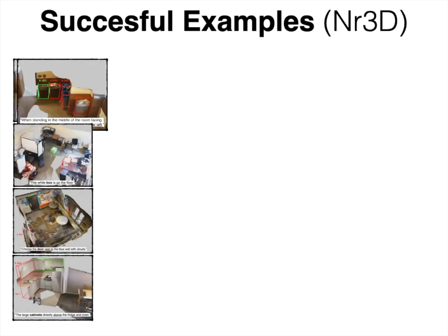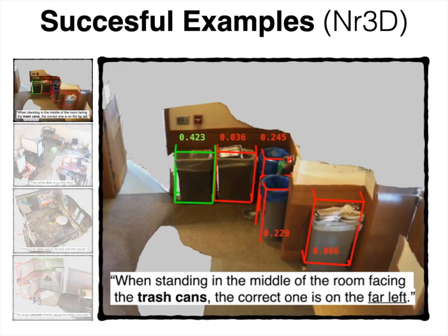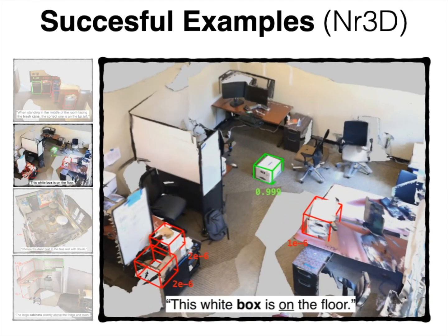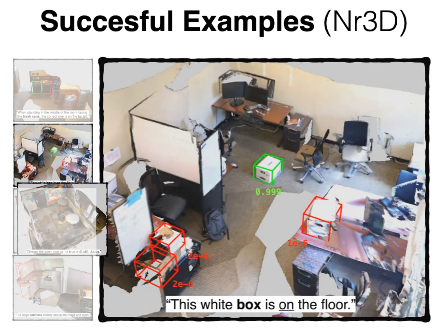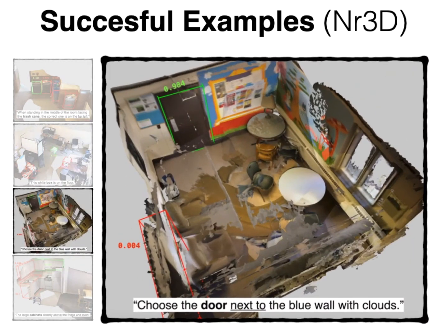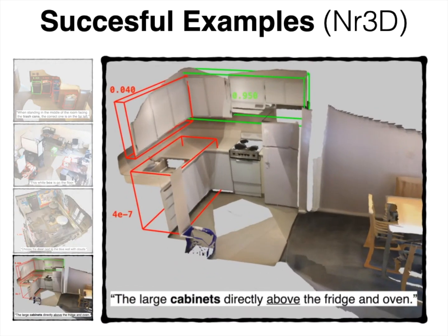Following are qualitative examples of applying ReferIt3DNet on natural utterances. Here we show successful cases on NR3D. We would like to emphasize that these examples are challenging since they require spatial, color, and shape understanding, as well as due to the presence of more than one distractor in the scene. The illustrated probabilities are the neural listener's confidence score, and note that we omit those of inter-class distractors.